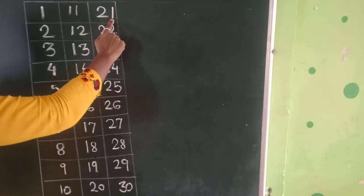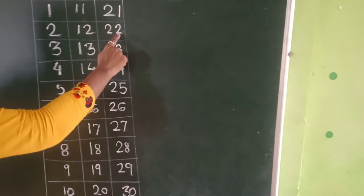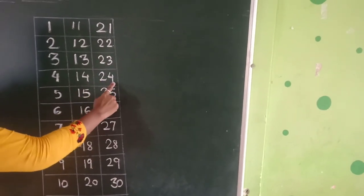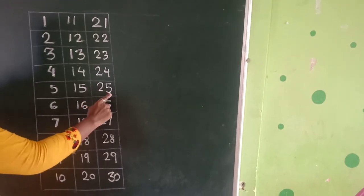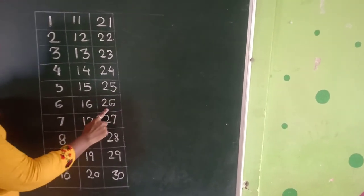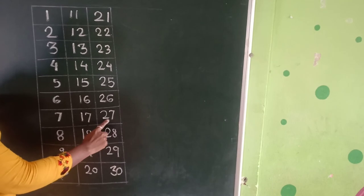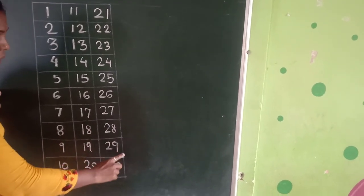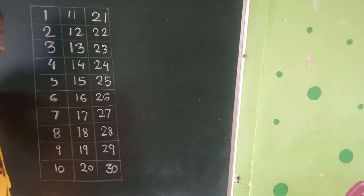Then, 2, 1, 21. 2, 2, 22. 2, 3, 23. 2, 4, 24. 2, 5, 25. 2, 6, 26. 2, 7, 27. 2, 8, 28. 2, 9, 29. And 3, 0, 30.